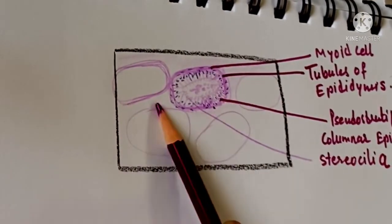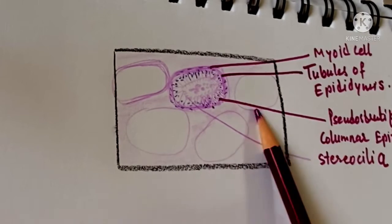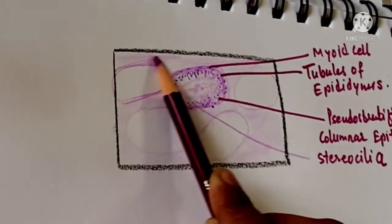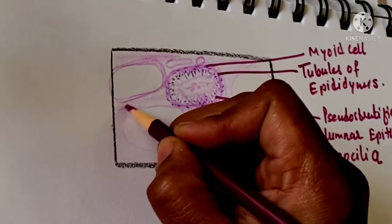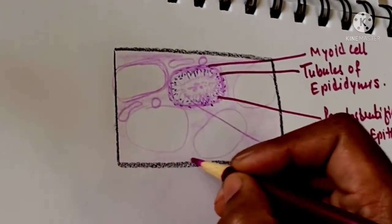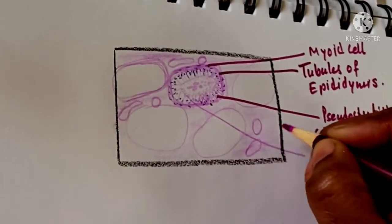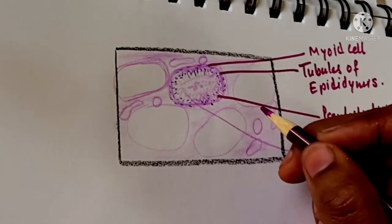In between the tubules, there is blood vessels and connective tissue that contains connective tissue cells and connective tissue fibers.